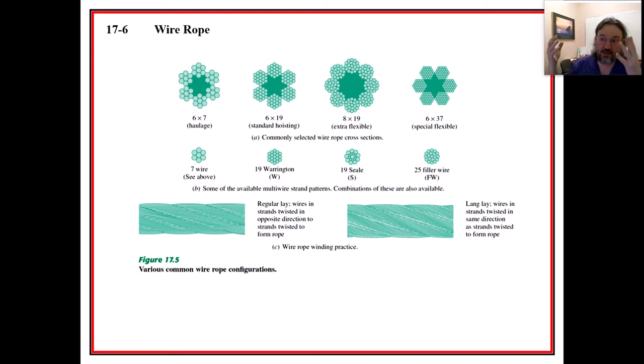The most common lay is this regular lay. Surprise. And where the coils are twisted in the opposite direction from the strands, right? So the wires within the strands are twisted in a certain direction, and then when they put the strands together, they put them into the opposite direction. So that's the regular lay right there. And one thing that you'll notice is that the wires appear to be going straight down, right, down the length of the thing. That's sort of, it's actually a deception. They're not going straight, but they appear to be straight.